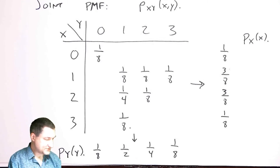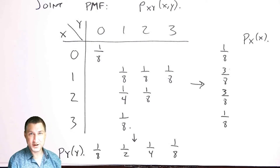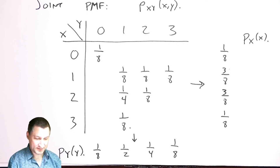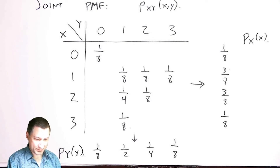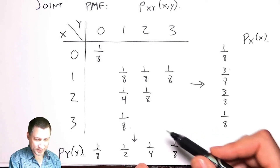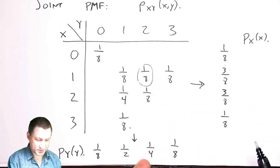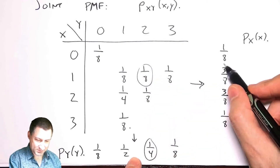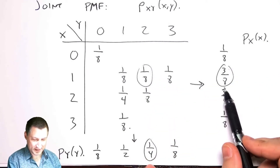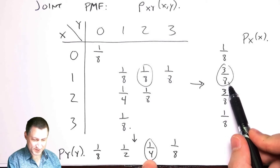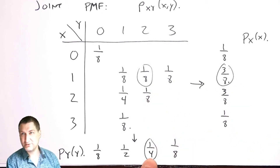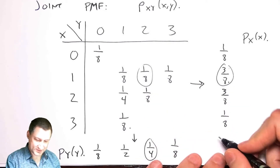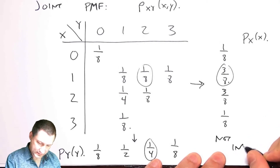Are these variables independent? No — if they were, the probability of any cell would equal the product of the corresponding marginals. For example, two entries would need to multiply to 3/32, but the actual joint probability is 1/8, which is not equal to that. So these are not independent.